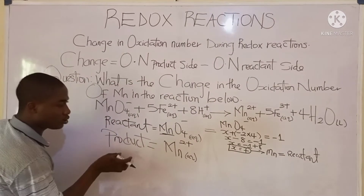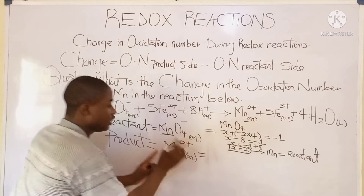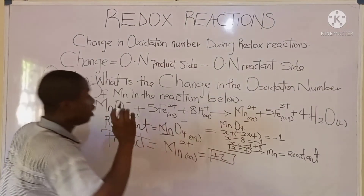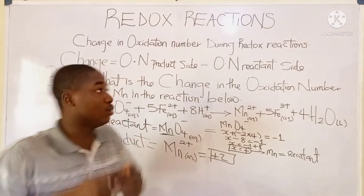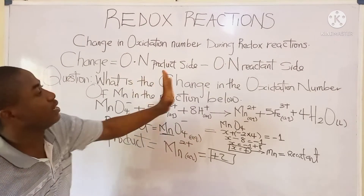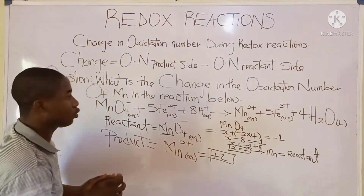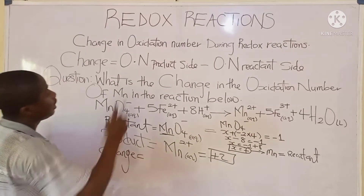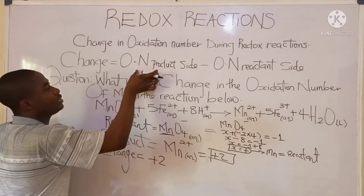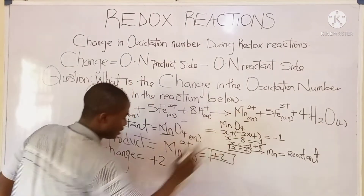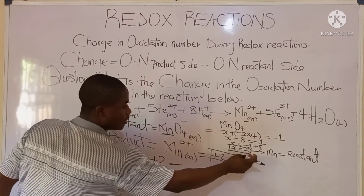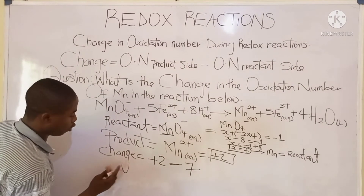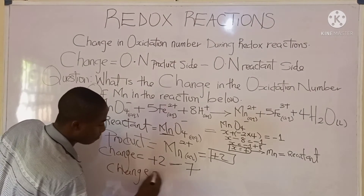For the oxidation number of manganese in the product side, it is just the charge, which is plus 2, because manganese appears as Mn²⁺. So the change in oxidation number equals the oxidation number in the product side minus the oxidation number in the reactant side: plus 2 minus plus 7. The change equals minus 5.